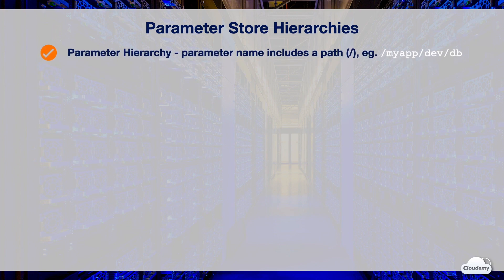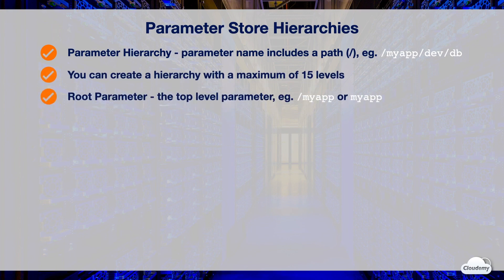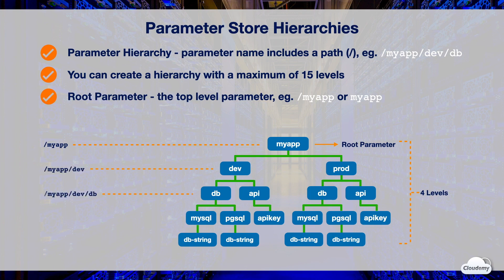Parameter Store lets you organize parameters using parameter hierarchies. A hierarchy is a parameter name that includes a path defined using a forward slash for each level. You can create a hierarchy with a maximum of 15 levels. The top-level parameter is called the root parameter, and you can specify it with or without a slash prefix. For example, we have a group of hierarchical parameters four levels deep. The root parameter is called MyApp, under which there are two sub-paths: dev and prod for different application environments. Each sub-path contains a subset of configuration data for databases and APIs. For example, MyApp/dev/db/mysql/dbstring is the bottom level of this hierarchy.